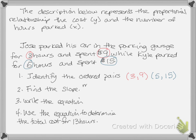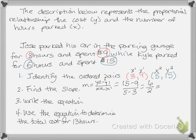Now I need to find the slope using those ordered pairs. My slope formula is m equals y2 minus y1 over x2 minus x1. I'll call Jose's ordered pair (x1, y1) and Kyle's (x2, y2). So m equals 15 minus 9 over 5 minus 3. That gives me 6 over 2, and 6 divided by 2 is 3. So my answer is m equals 3.